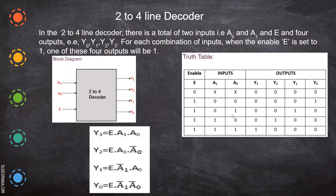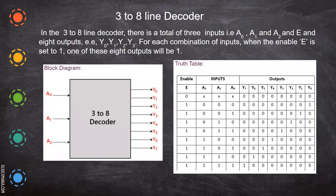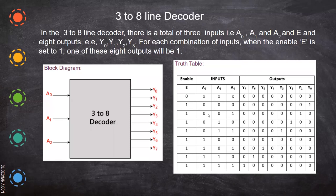In a 3-to-8 decoder, there are 3 inputs and 2-power-3, which is 8 outputs. Based on the input combination — for example, 0,0,0 — y-naught will be on. If the input is 0,0,1, then y1 will be enabled with an output of 1, and all others will be 0. This is what we have seen in the decoder.